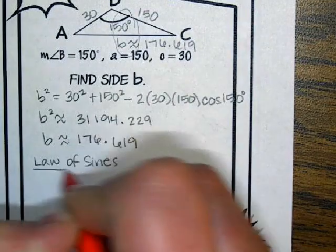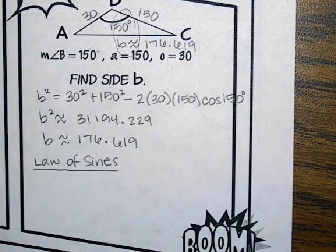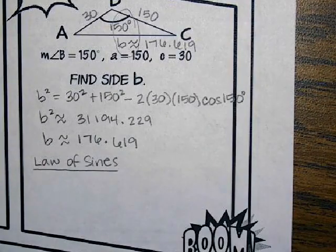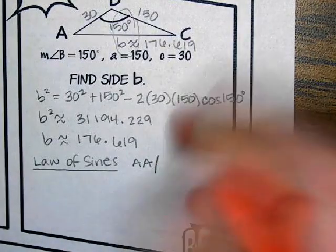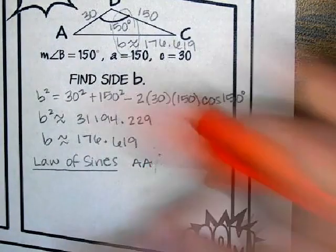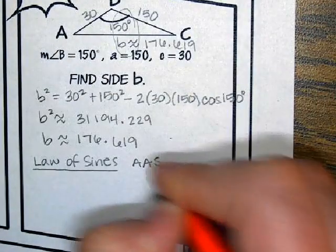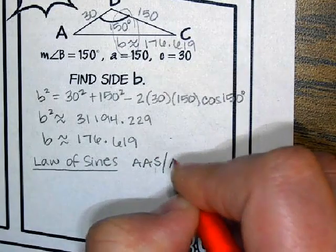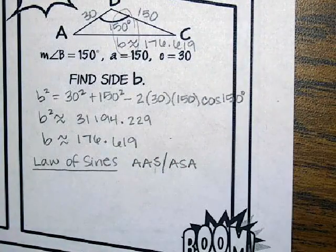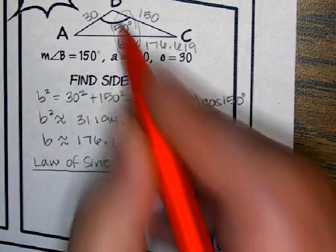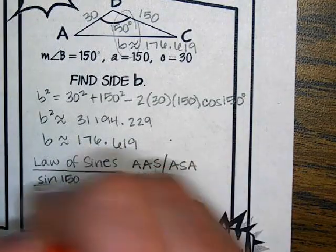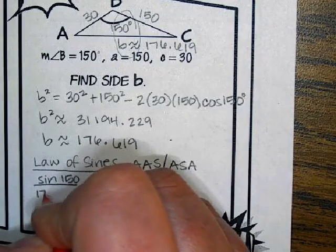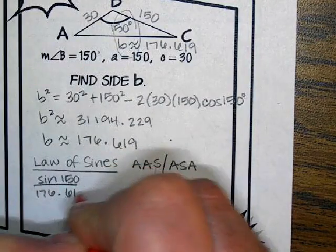I'm going to do law of sines to finish the problem. This is not a rule — you don't have to use law of sines. You can use law of cosines if you want, but most students like to do law of sines. I'm going to make sure that the information I use is either angle-angle-side or angle-side-angle. So I'm going to start with sine of 150 over 176.619, and I'm not going to type that rounded decimal in — I'm going to go up and copy-paste when I use it.